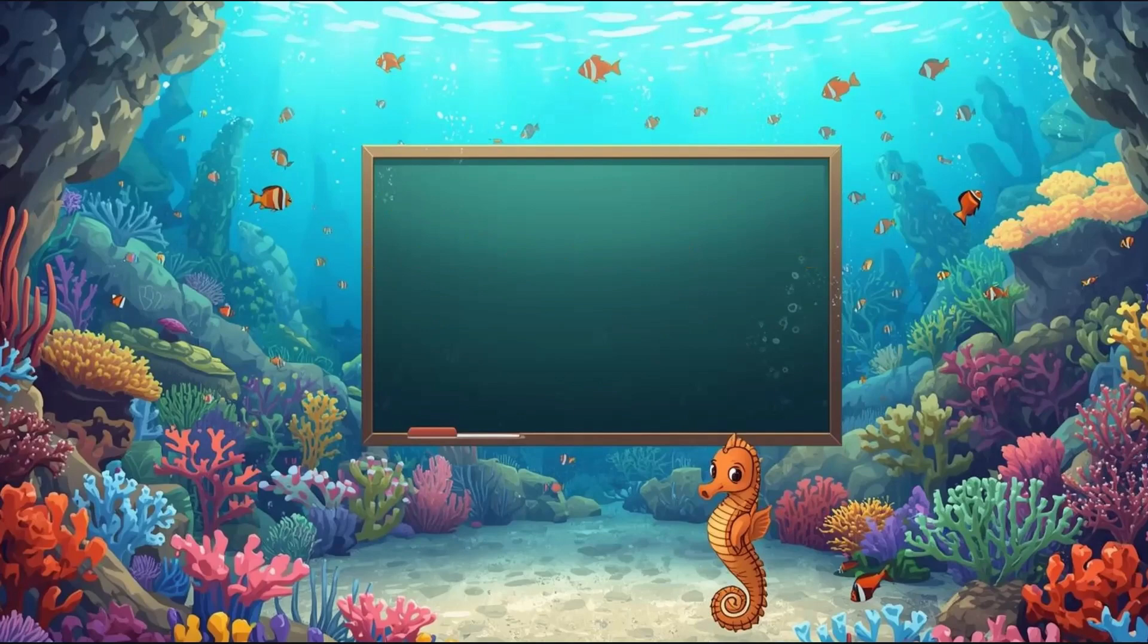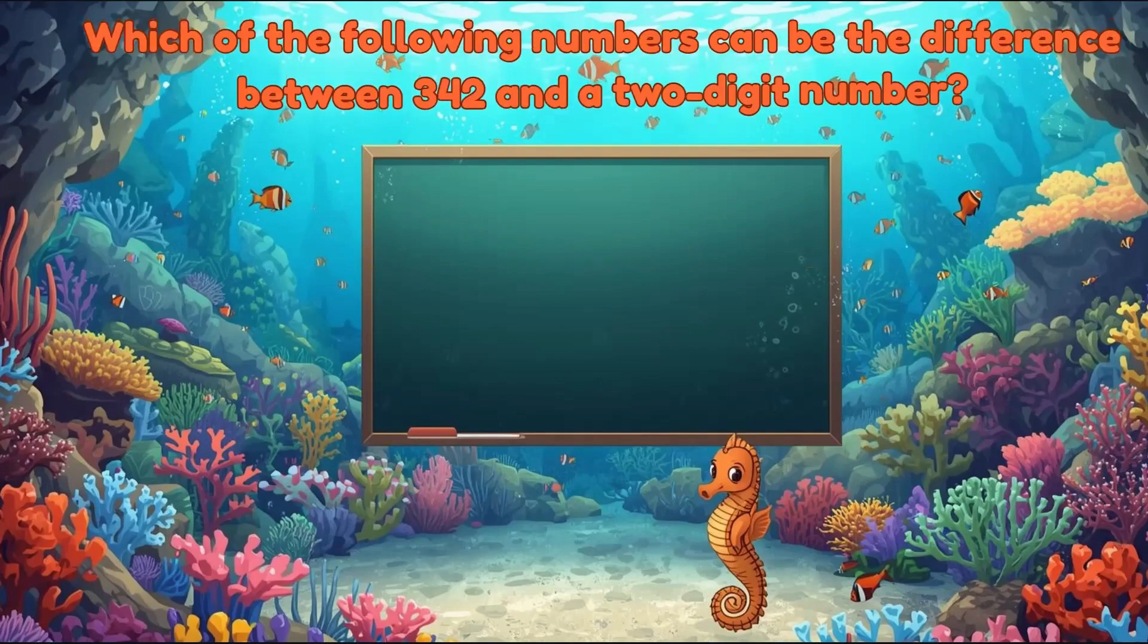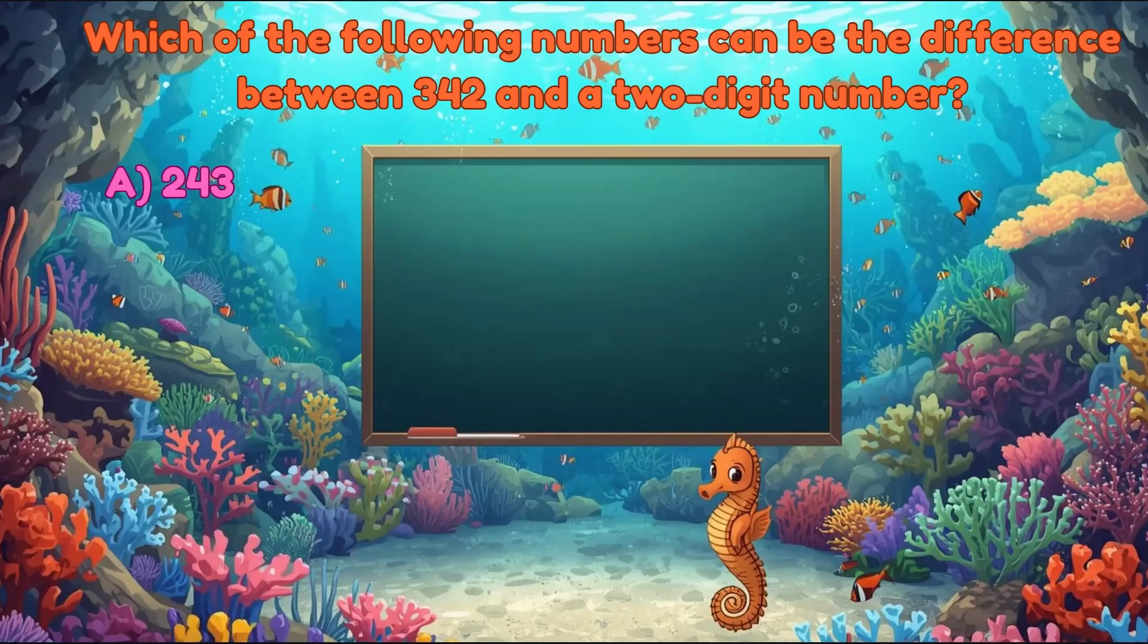Want another puzzle? Yes. Which of the following numbers can be the difference between 342 and a two-digit number? Options: A. 243, B. 1,342, C. 2,400, D. 1,050.